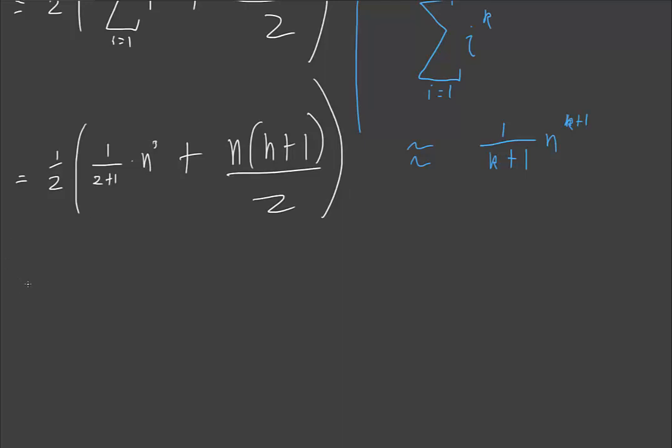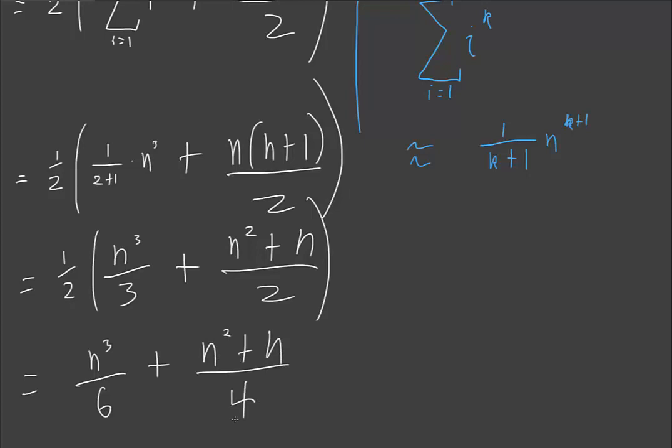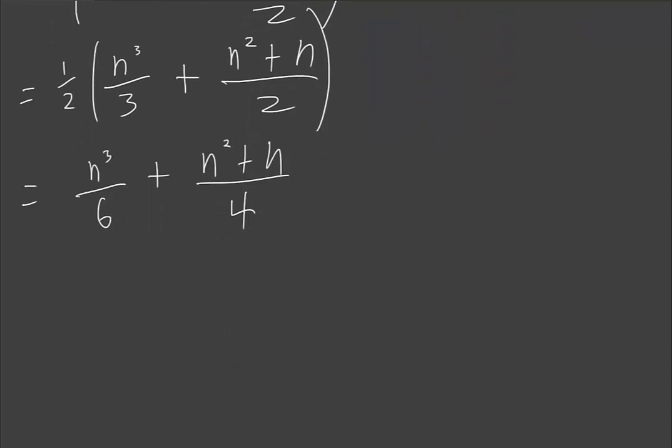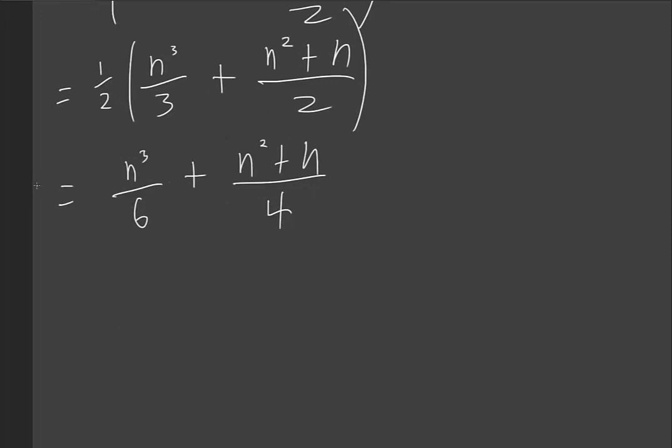If we want to keep going with this, we can. We can say a half times n cubed on 3 plus n squared plus n on 2. We can expand the half back in. This equals n cubed on 6 plus n squared plus n on 4. And actually, you can probably even get it further than that. But at this point, that is totally the answer to our cost of this equation, which is unsurprisingly bounded by theta of n cubed, because highest order polynomial is n cubed, so this constant doesn't matter, et cetera.